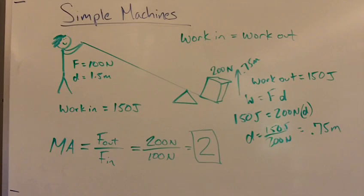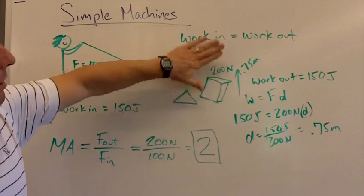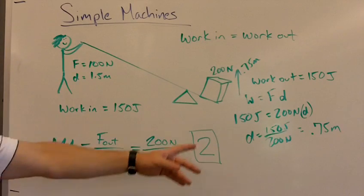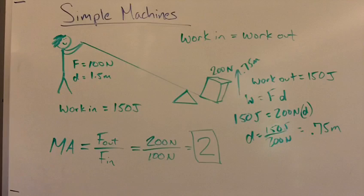It's a ratio of force out over force in. Therefore, you do not need a unit. If this box weighed 400 newtons, then it would probably only lift a quarter of 1.5, which is 0.375 meters. So it would go up less distance.